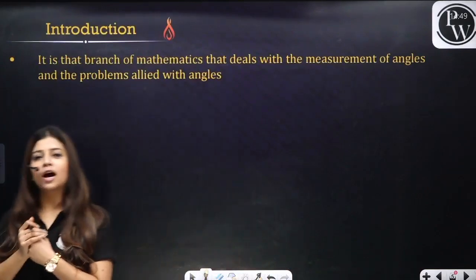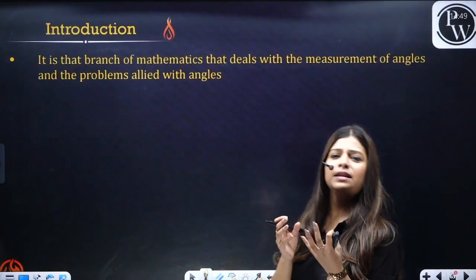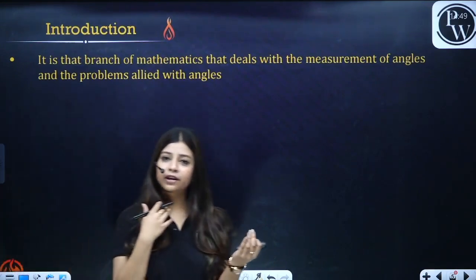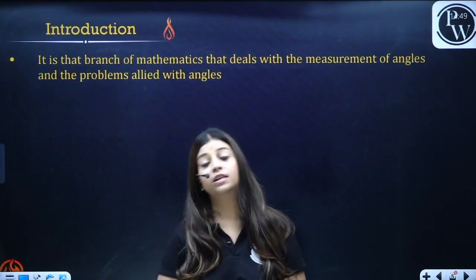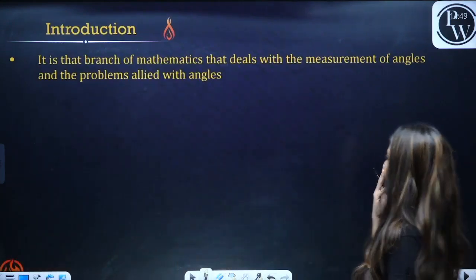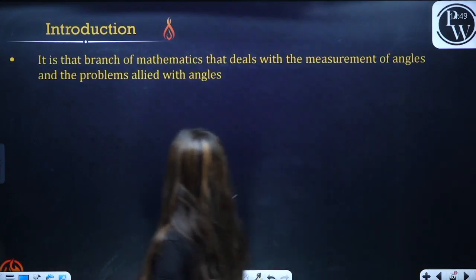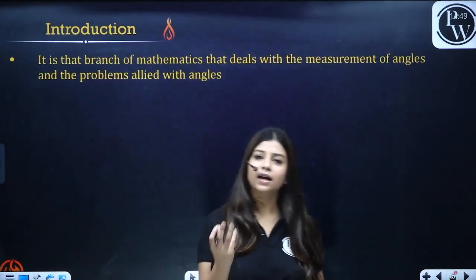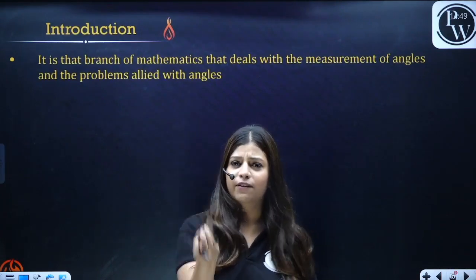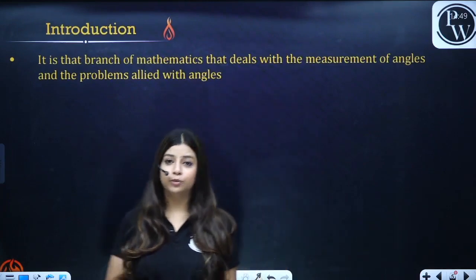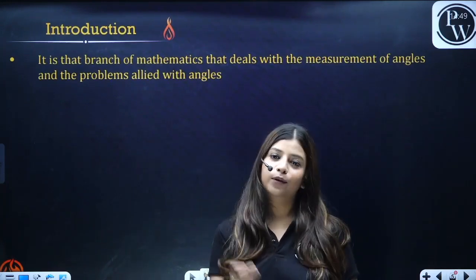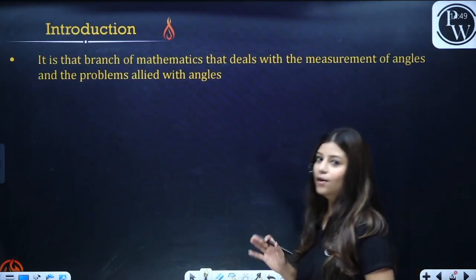What is trigonometry? 'Tri' means three, 'gon' means sides, and 'metry' means measurement. So trigonometry is about using the measurement of a three-sided figure. It is a branch of mathematics that deals with the measurement of angles and problems allied with angles and sides. In this chapter, we will specifically deal with the right-angle triangle, because trigonometry is only applicable in your right-angle triangle.